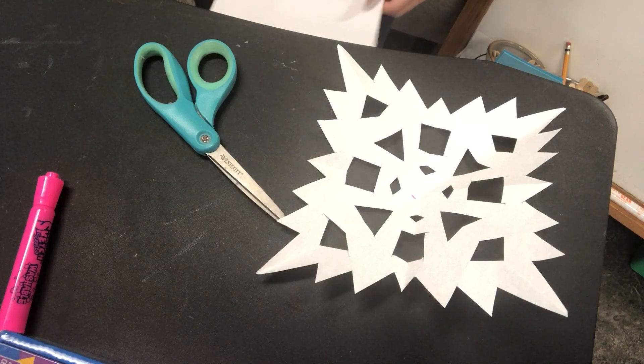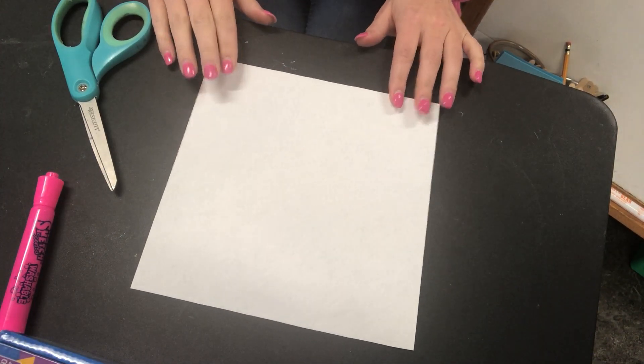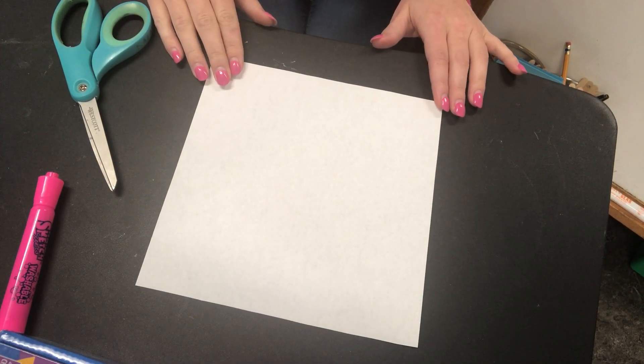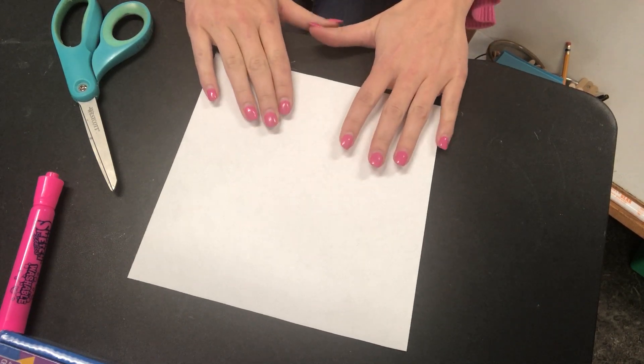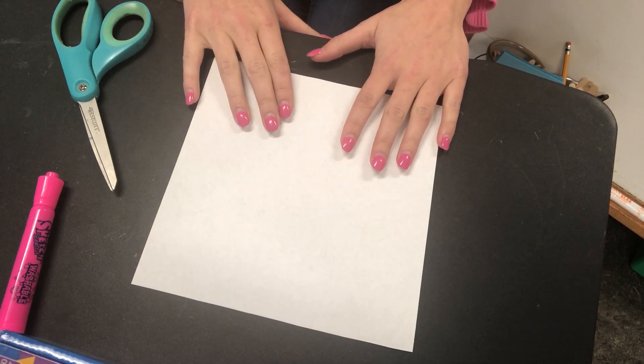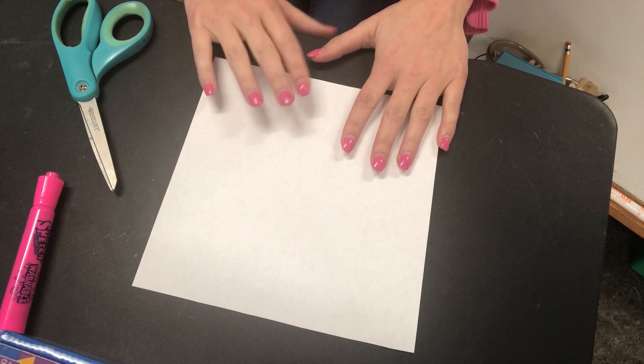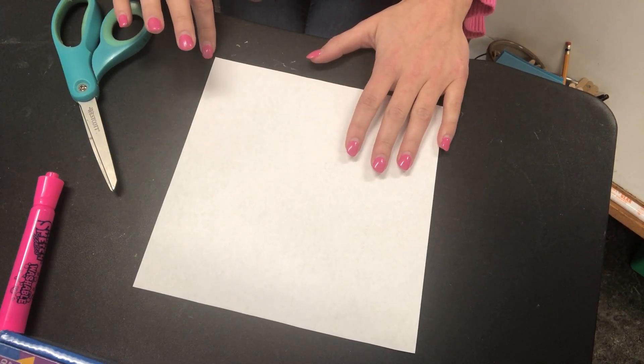So the first step is to grab a square piece of paper like this one and you should have gotten these along with your distance material pickup items. There should be a few square pieces of paper already put in your bag, otherwise you can go ahead and just cut the end off of a regular rectangle piece of paper to make a square.